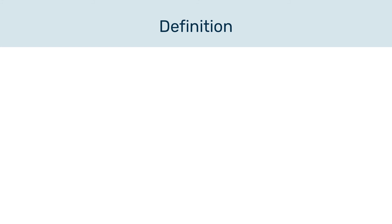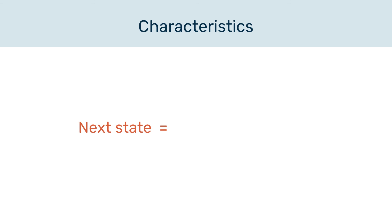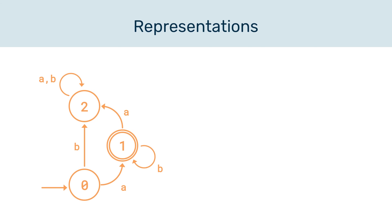And we're done. Let's have a quick recap. We have defined the term finite state machine — this could be a really standard two-mark question, so learn this definition. A finite state machine is a computing machine that has a fixed set of possible states, a set of inputs that change the state, and a set of possible outputs. The next state is based on both the current state of the machine and the input. This should be extra apparent when you look at the two different representations: state transition diagrams and state transition tables.